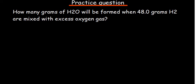Water being formed tells us it is a product, and products appear on the right-hand side of the equation. When 48 grams of hydrogen and excess oxygen gas are mixed, that tells us hydrogen and oxygen are our reactants, and reactants appear on the left-hand side.